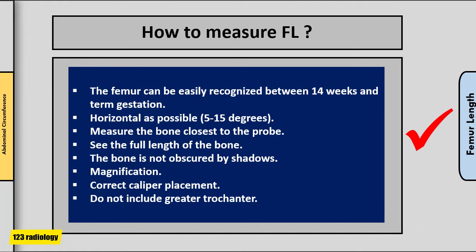To summarize femur length measurement: the femur can be recognized between 14 weeks and term. The femur should be as horizontal as possible. Measure the bone closest to the probe. Visualize the full length of the bone without shadowing. Magnification is important. Correct caliper placement is essential. And do not include the greater trochanter in the measurement.